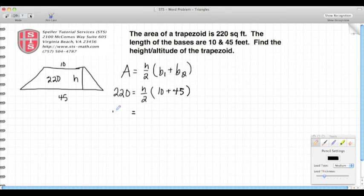Now based on the order of operations, I'm going to take care of what's inside the parentheses first. So here I have 10 plus 45, which gives me 55.